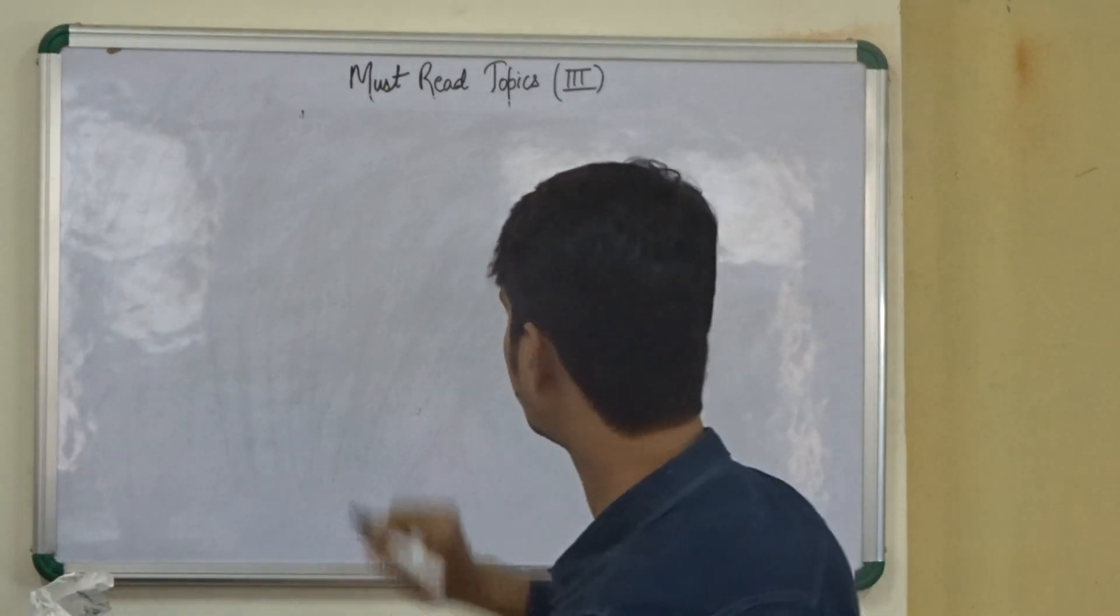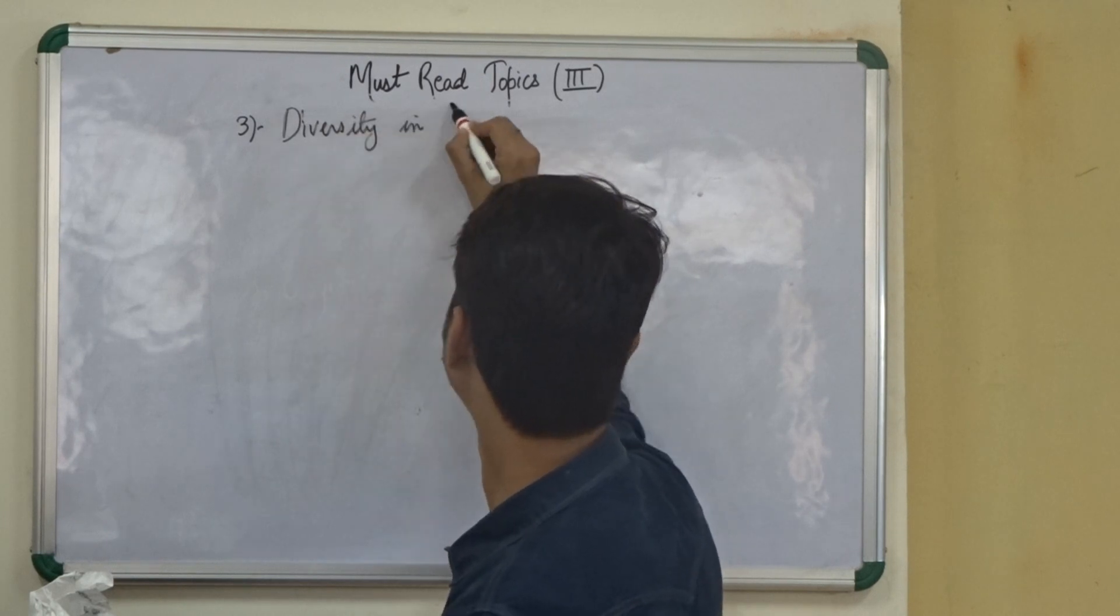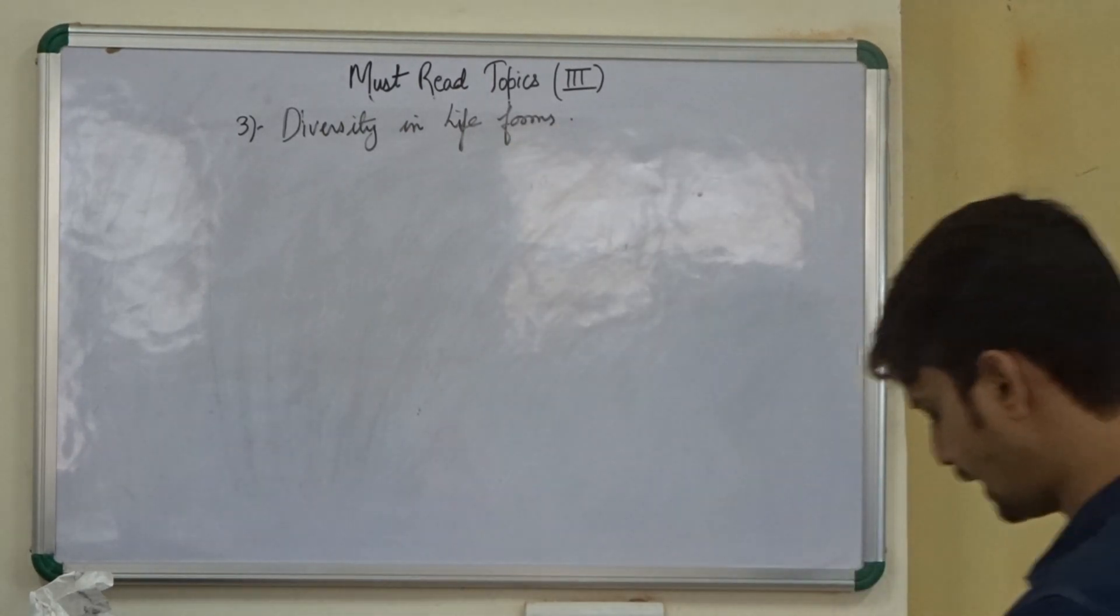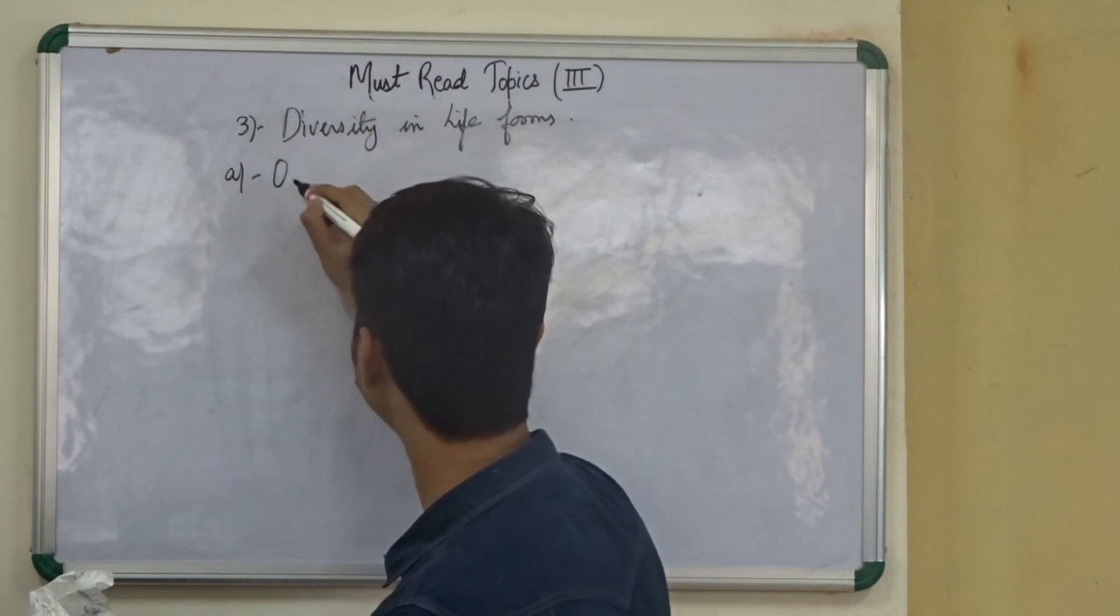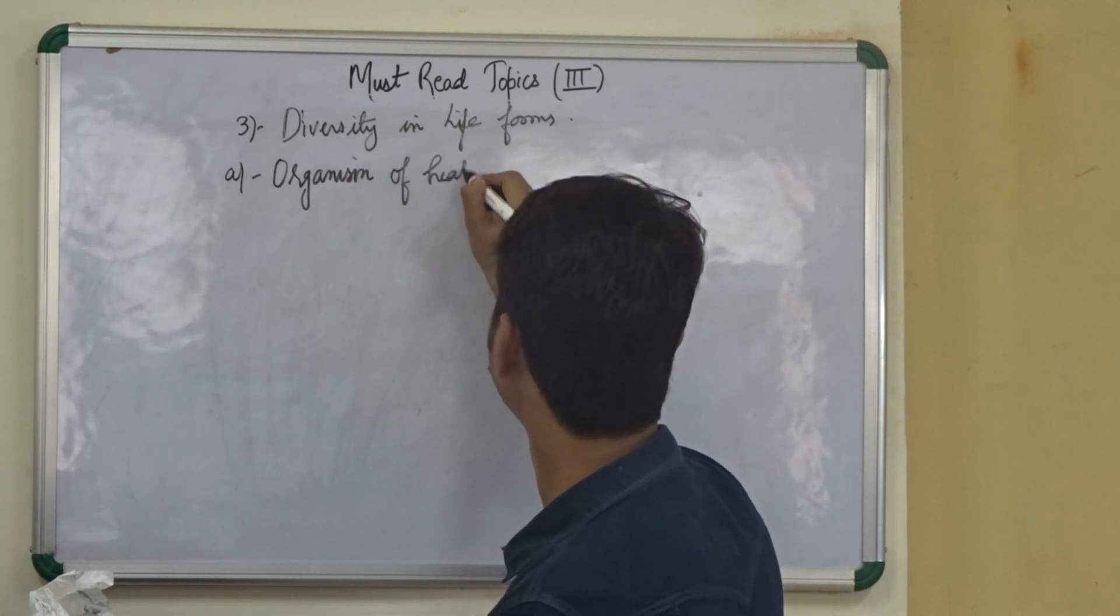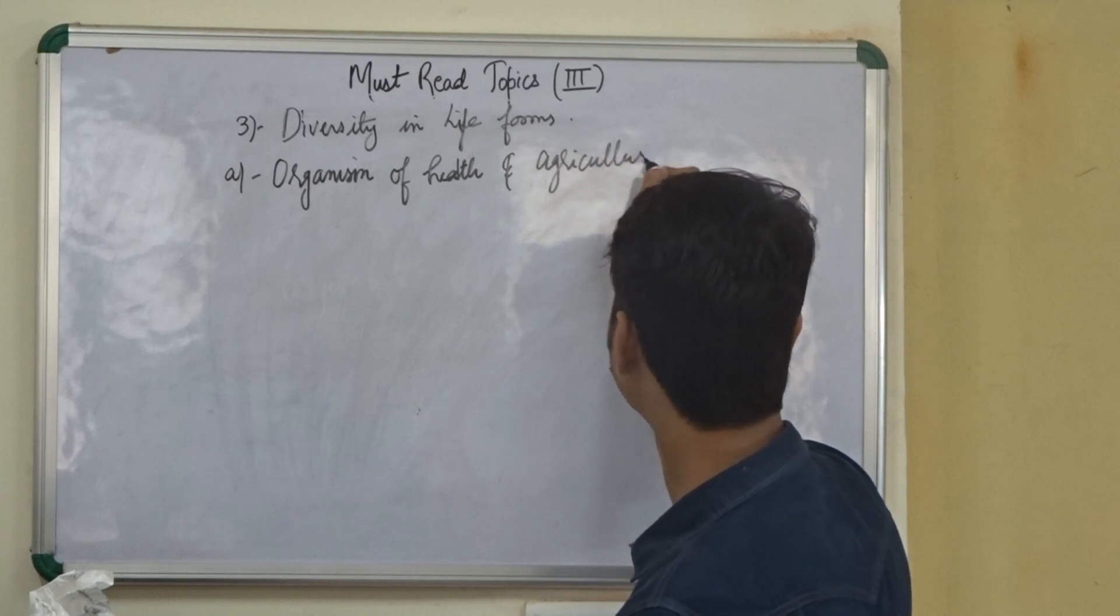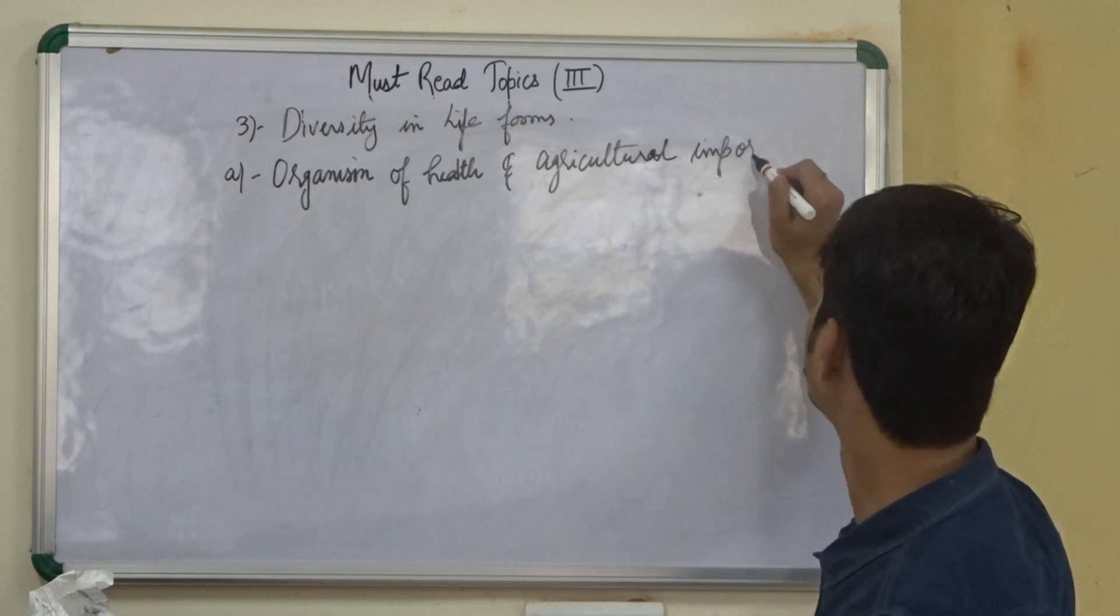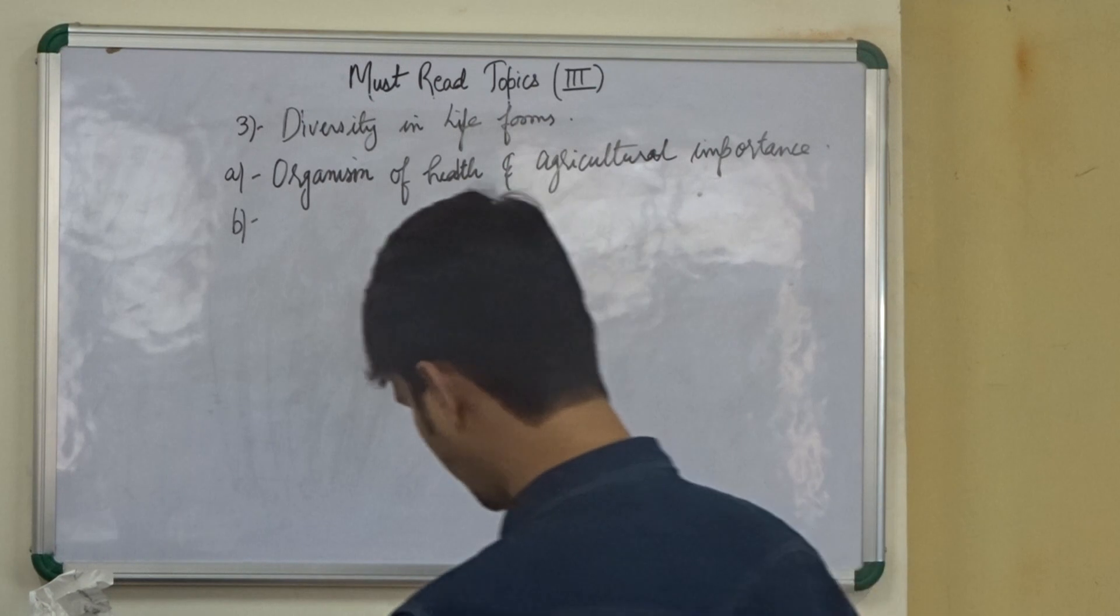The third part is the diversity in life forms. So here also we are very specific and we have just selected one, two, three topics. First one is organisms of health and agricultural importance. Then we must know about the diseases to human and plant.